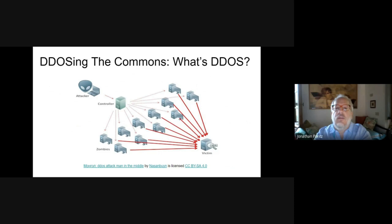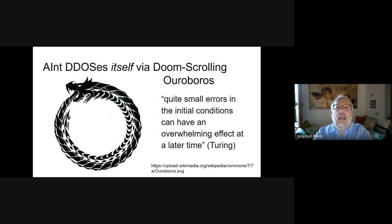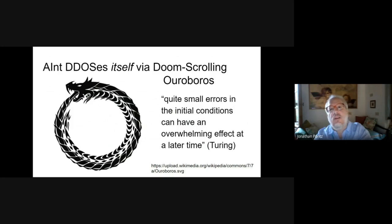DDoSing the commons is about commodifying original content created by humans and flooding it back into the commons as noise. Our focus is not merely on either the input or output as typically determined, but also on the long-term consequences of generative AI output over time. As Turing already noted, quite small errors in the initial conditions can have an overwhelming effect at a later time. Initial instabilities can lead to even worse outcomes if today's models are trained on the commons flooded with the outputs of yesterday's models — in a kind of doom-scrolling ouroboros.